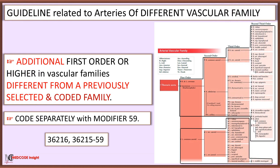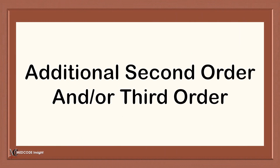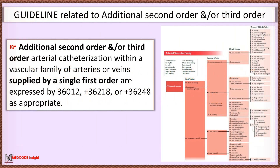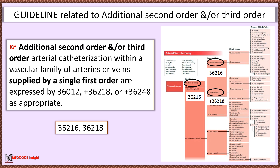In selective catheterization, when additional first order or higher vessels in a vascular family different from the previously selected and coded family are accessed, they should be coded separately with modifier 59. Additional second order and third order arterial catheterization within the vascular families supplied by a single first order vessel is expressed by codes 36012, 36218, or 36248, as appropriate.